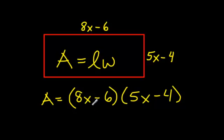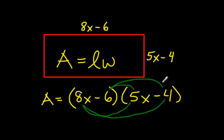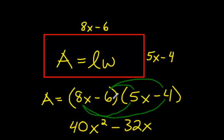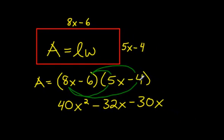And we're going to use first, outside, inside, and last. We're going to use FOIL. So 8 times 5, 40X squared. 8X times negative 4, negative 32X. Negative 6X times 5X, negative 30X. And negative 6 times negative 4 is positive 24.